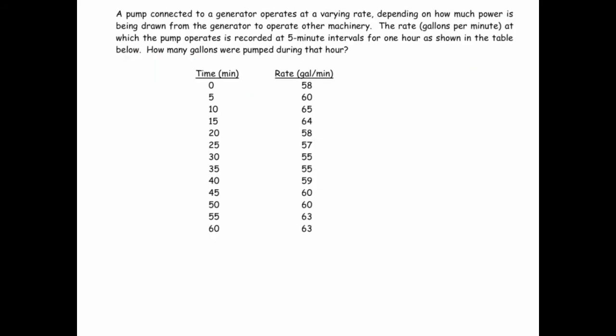Sometimes you'll be asked to find the accumulation of some quantity, but you're not actually given the function, you're just given some sample data. So for instance, in this case, we're told that a pump connected to a generator operates at a varying rate, depending on how much power is being drawn from the generator, the rate in gallons per minute at which the pump operates is recorded at five minute intervals, for one hour, as shown on the table.